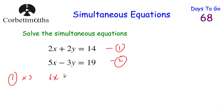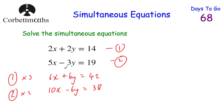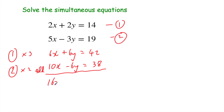So I'm going to get 6y and minus 6y. Multiplying equation 1 by 3: 2x times 3 is 6x, 2y times 3 is 6y, and 14 times 3 is 42. Now doubling equation 2 to get minus 6y: 5x times 2 is 10x, minus 3y times 2 is minus 6y, and 19 times 2 is 38. Adding the two equations together: 6x plus 10x is 16x, minus 6y plus 6y is 0, and 42 plus 38 is 80. So 16x equals 80. Dividing by 16 gives x equals 5.